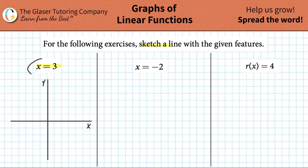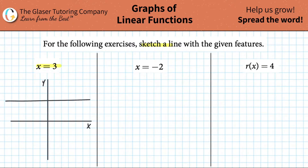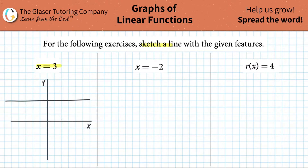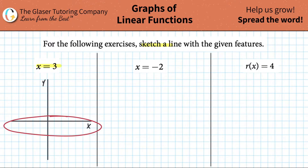Now, I know this seems like it doesn't follow the y equals mx plus b form — I can show you that it does — but let's just keep this in mind. What this is saying is that whatever line I plot, the x value always must equal 3, always, everywhere. So where's 3 on your x axis — positive 3? It's right here. Plot that point there.